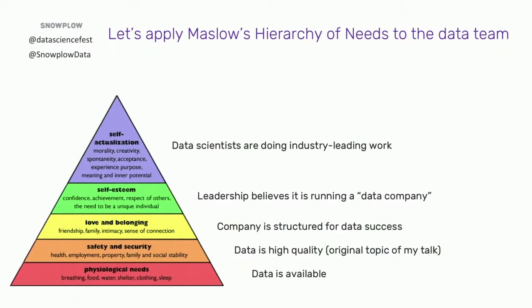Thinking about the data team, I came up with a hierarchy of needs, a bit like Maslow's. I got feedback that the deck needed more random forests, so I added that slide. Applying Maslow's hierarchy to the data team: the bottom is data is available — the most basic need. Above that, safety: data is high quality. Then love and belonging: the company is structured for data success. Self-esteem: leadership believes it's running a data company, and it's actually changing. And self-actualization: data scientists are doing industry-leading work.